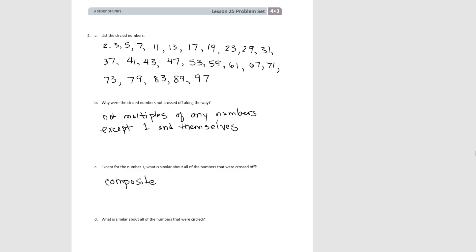Pause the video and think for a minute about that. What's similar about all the circled numbers is that they are prime — because this is the definition of a prime number: no factors except one and themselves. They're not multiples of any numbers except one and themselves, therefore they're prime numbers. And that's the end of lesson 25.